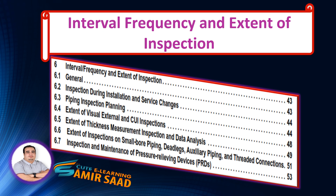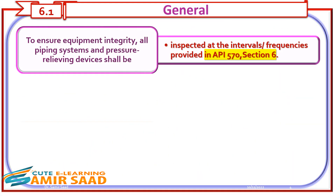This section provides an overview of the general structure of the text in Clause 6. The following is a list of all the sub-clauses as listed in the Table of Contents. In the following slides we highlight important information contained in Clause 6 accompanied by the sub-clauses. To ensure equipment integrity, all piping systems and pressure-relieving devices shall be inspected at the intervals and frequencies provided in API 570, Section 6.